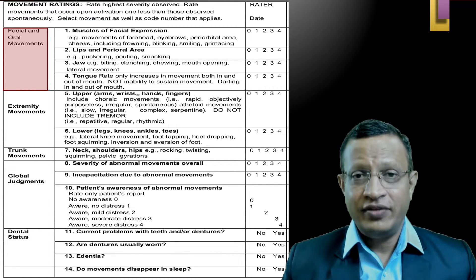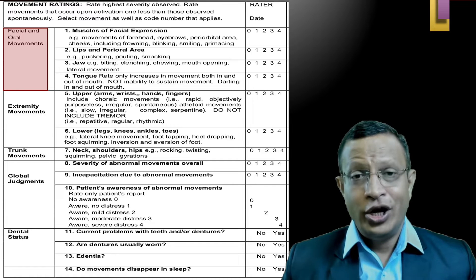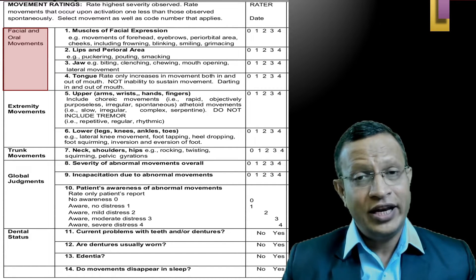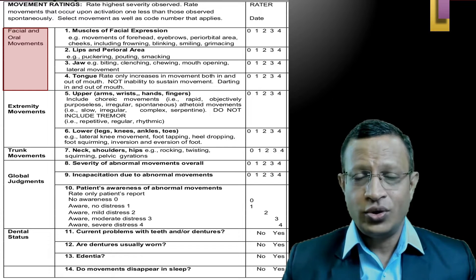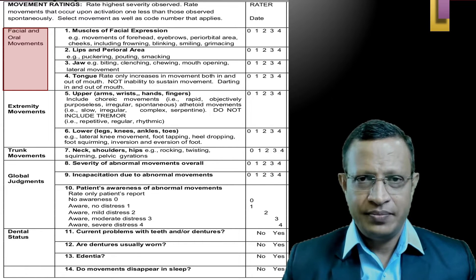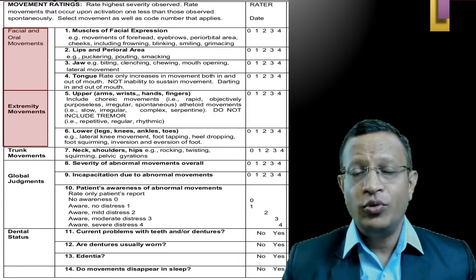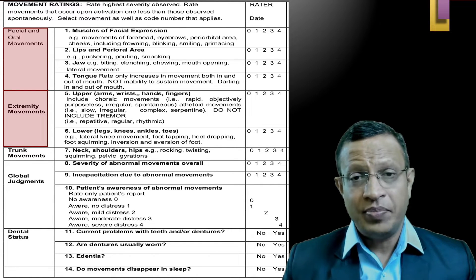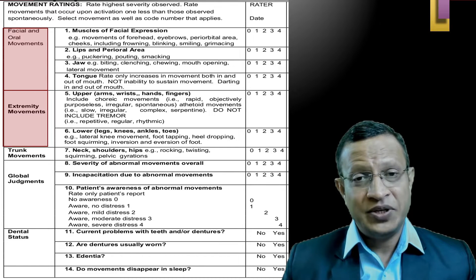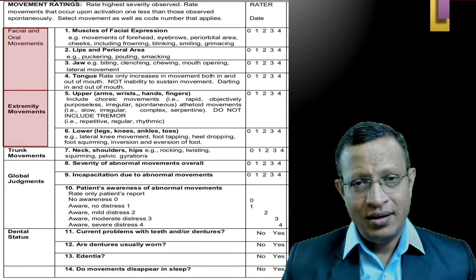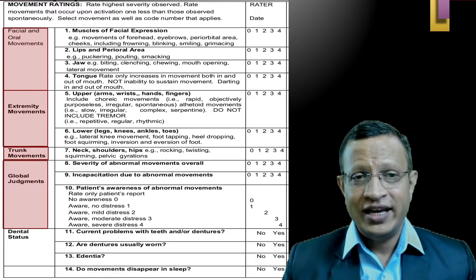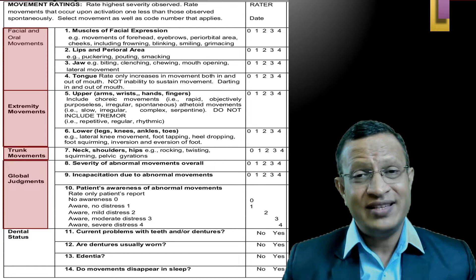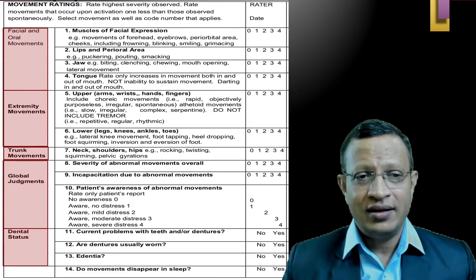The first domain is facial and oral movements — assessing any abnormal movements involving the oral area, perioral region, lingual area, and facial muscles. The second domain is extremities, that is upper limb and lower limb, where TDs are very common. Third is trunk movements — that is rocking movements of the thorax. Fourth is global judgment, involving asking whether the patient is aware of these movements. Finally, the fifth is dental status.